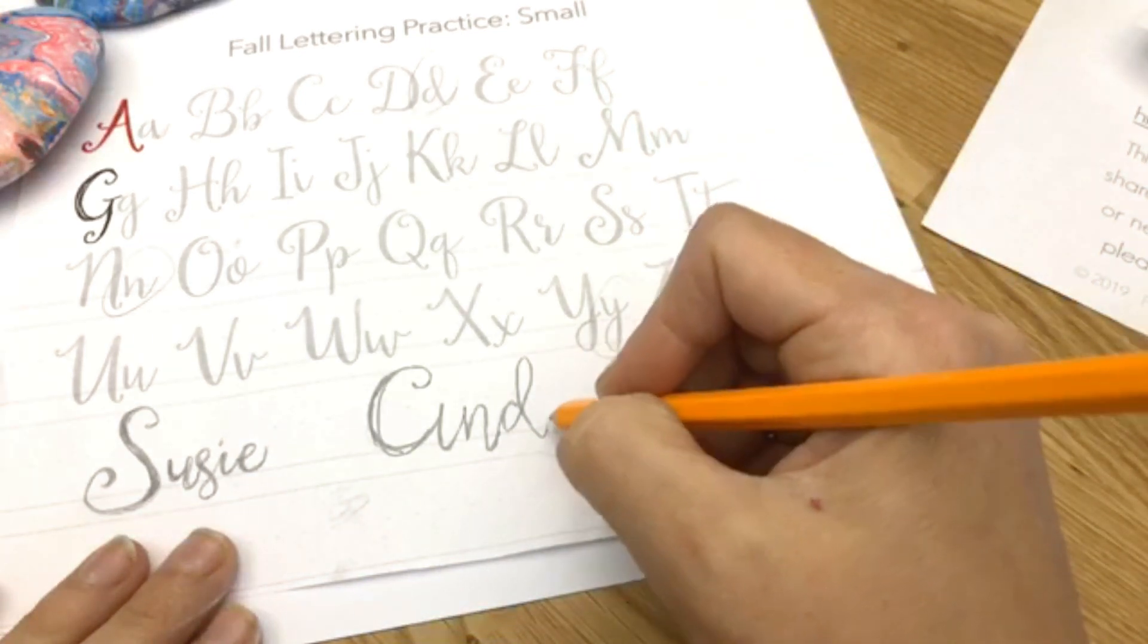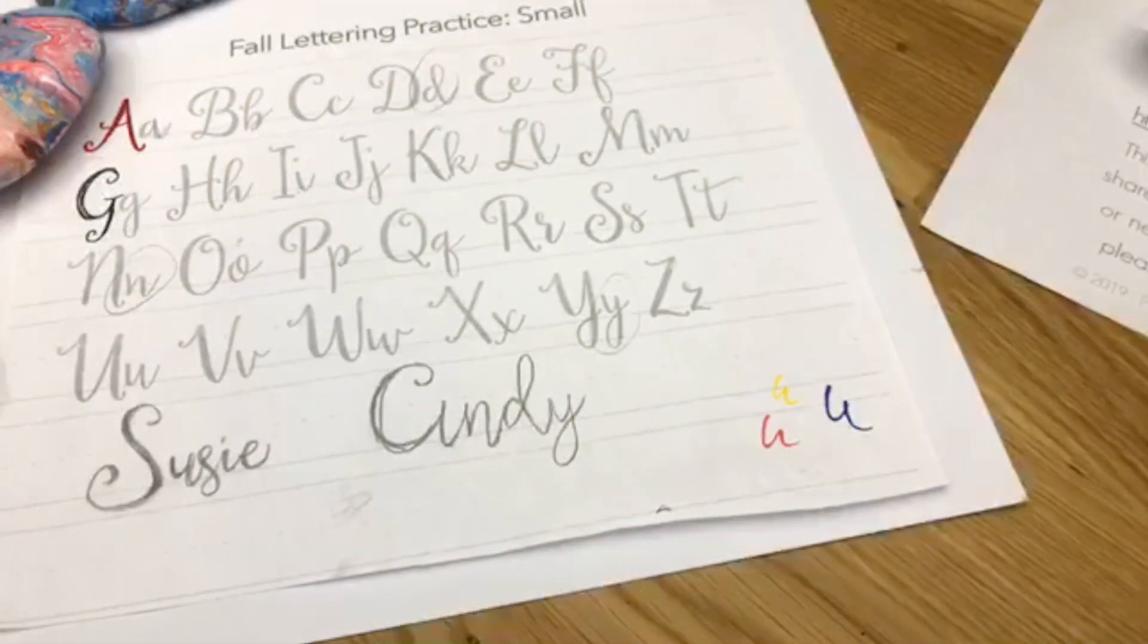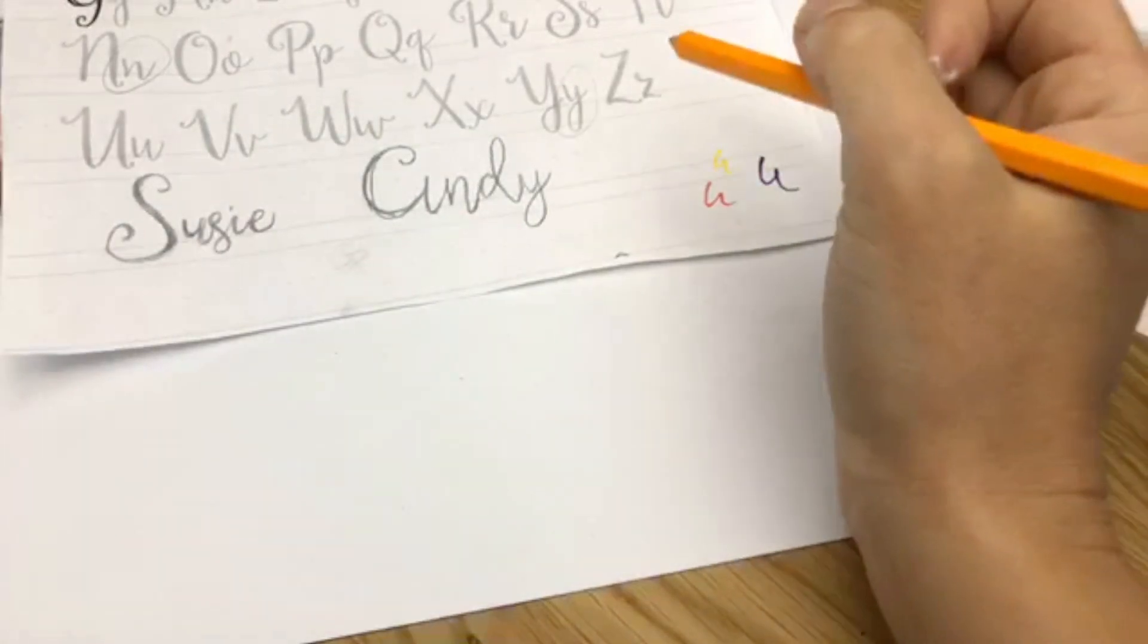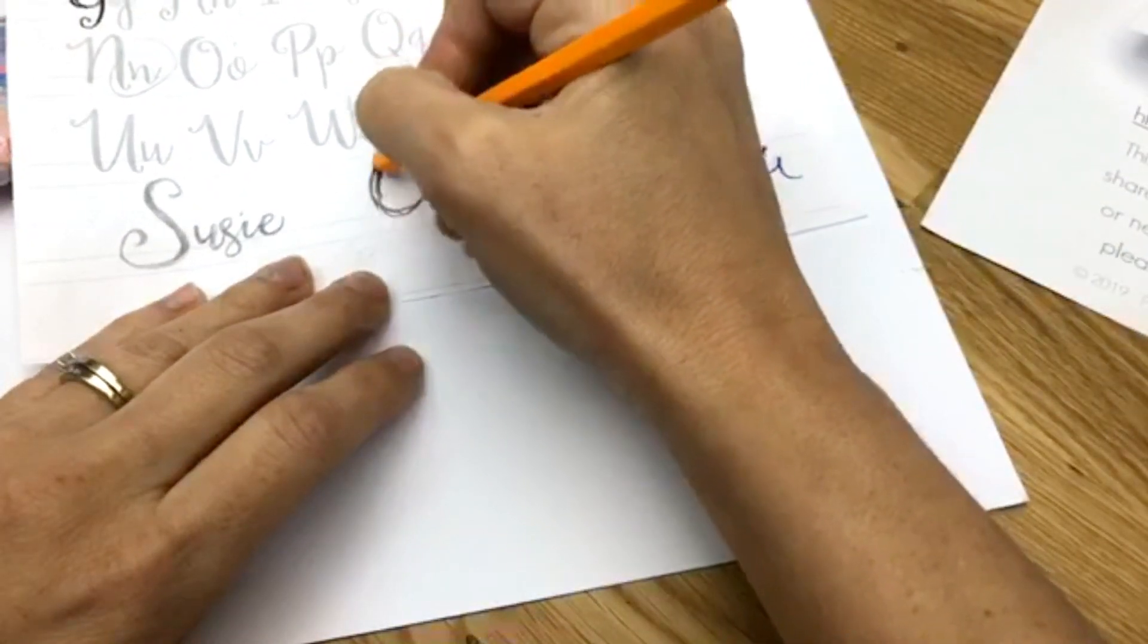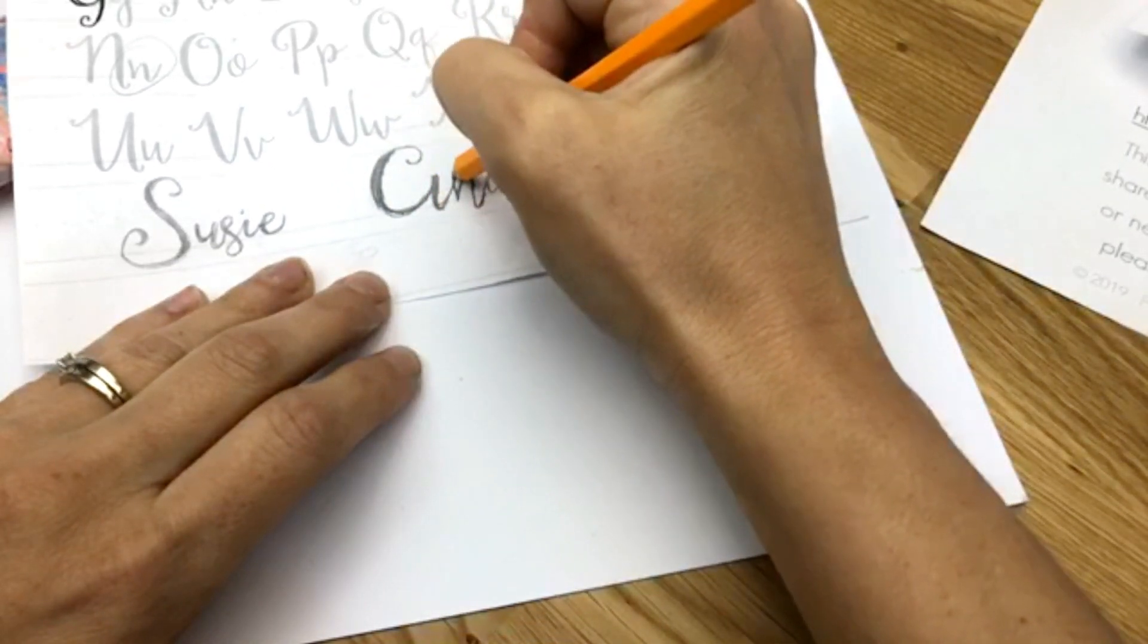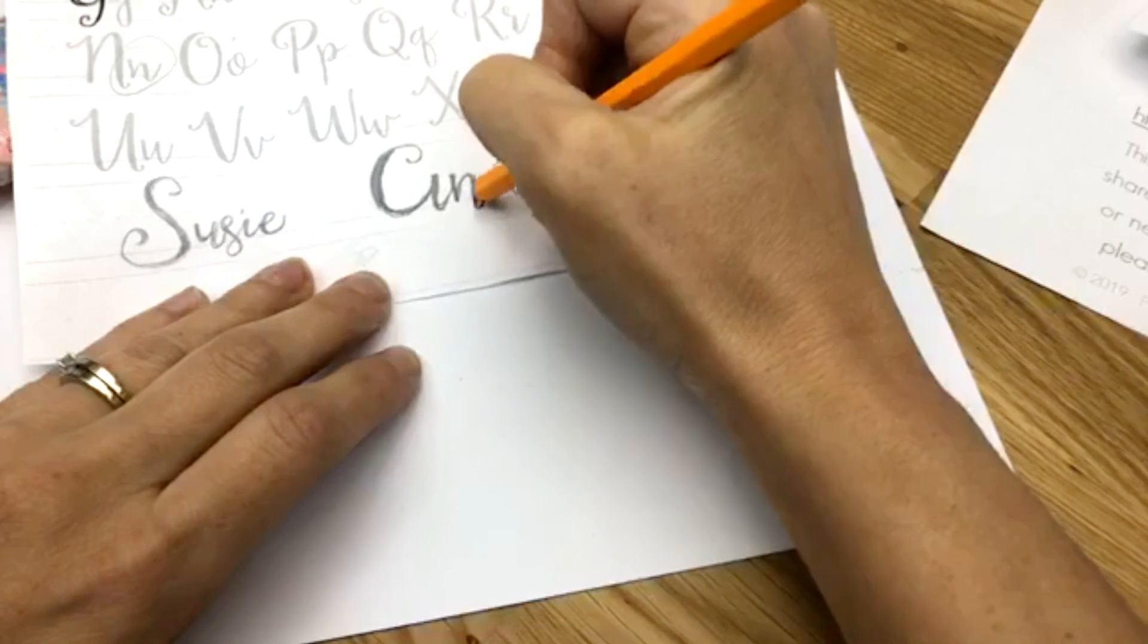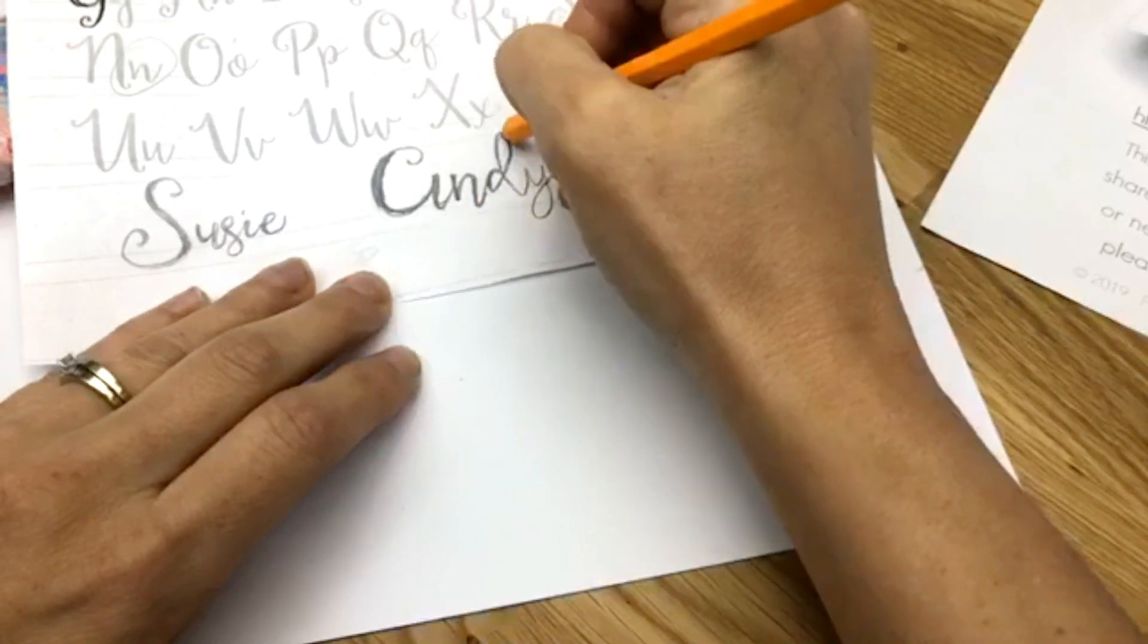Once you have your basic letters and shapes together, we're going to start thickening the lines. The downward slopes are always your thicker slopes, so you're going to fill in that downward slope. Up is thin, down would be thick. Up thin, down thick. Up thin, down thick. And you continue that while you're doing your letter.